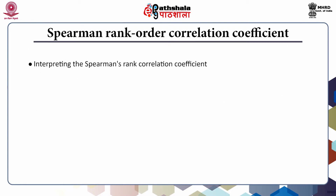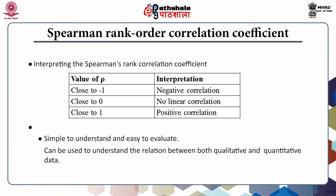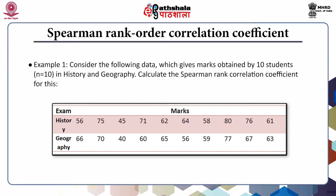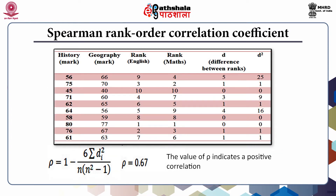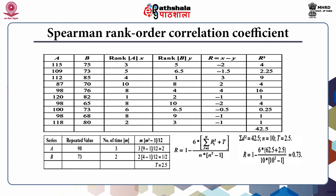The interpretation of Spearman's rank correlation coefficient is as follows: when rho is close to minus 1 there is a negative correlation; when the value is close to 0 there is no linear correlation; and when the value is close to 1 there is a positive correlation. The advantage of rank correlation coefficient is that it is simple to understand, easy to evaluate, and can be used to understand the relation between both qualitative and quantitative data. Examples for the calculation of Spearman's rank order correlation coefficient are shown on the following slides.